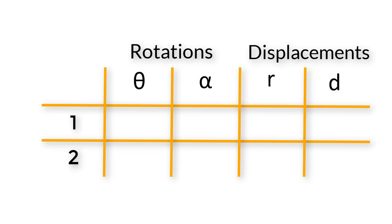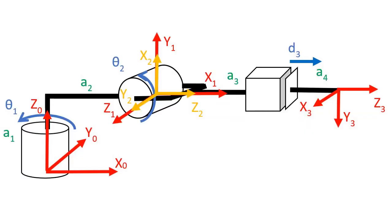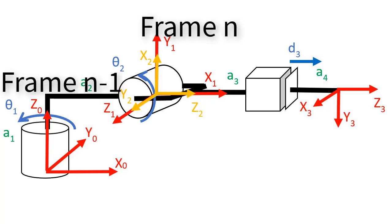Two of the parameters record rotations and two parameters record displacements. The four parameters are theta, alpha, r, and d. Theta and alpha are rotation parameters, and r and d are displacement parameters. Suppose we have two frames that are next to each other, like frame 0 and frame 1, or frame 1 and frame 2. Since this could apply to any two frames that are next to each other, I'm going to call these two frames frame n and frame n minus 1.